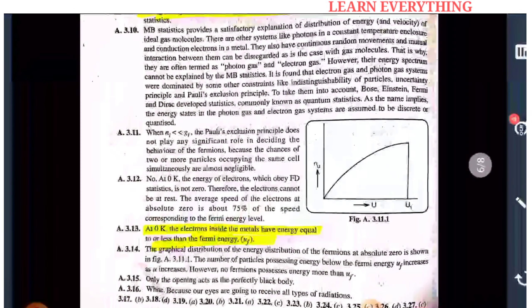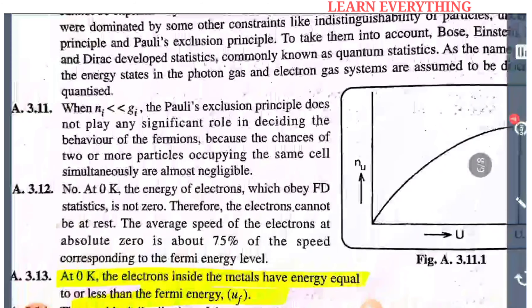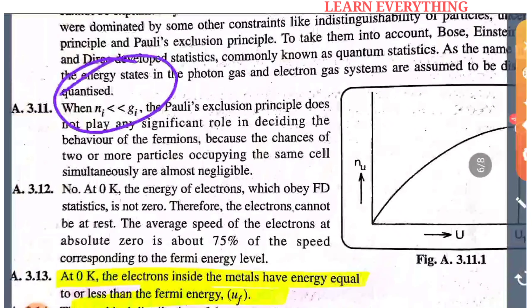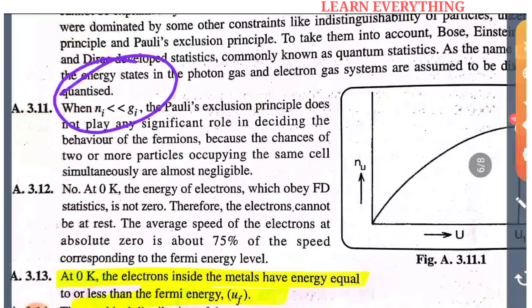When NI is less than GI, the Pauli exclusion principle does not play any significant role in deciding the behavior of fermions. If the number of particles in a compartment is much less than the number of cells, the exclusion principle becomes insignificant.